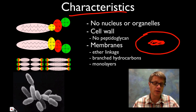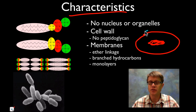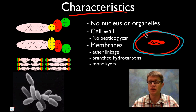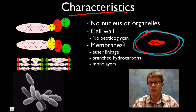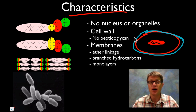One thing they also have that's similar to bacteria is a cell wall that goes around the outside of the archaebacteria. In bacteria this is made up of peptidoglycan, but in archaebacteria it's not made of peptidoglycan — it's made of a simpler kind of connecting subunit, which we call an S layer.